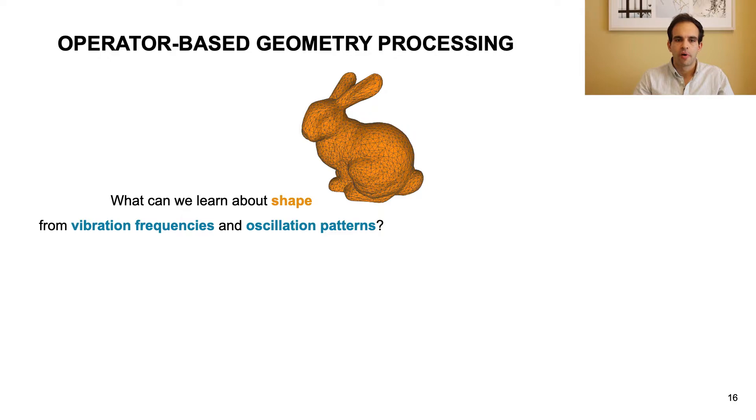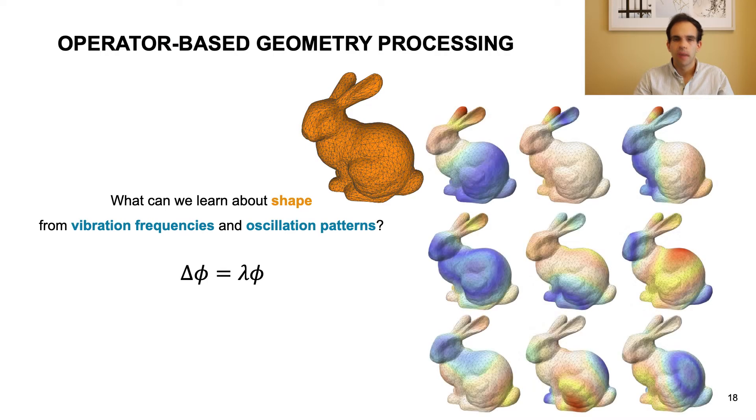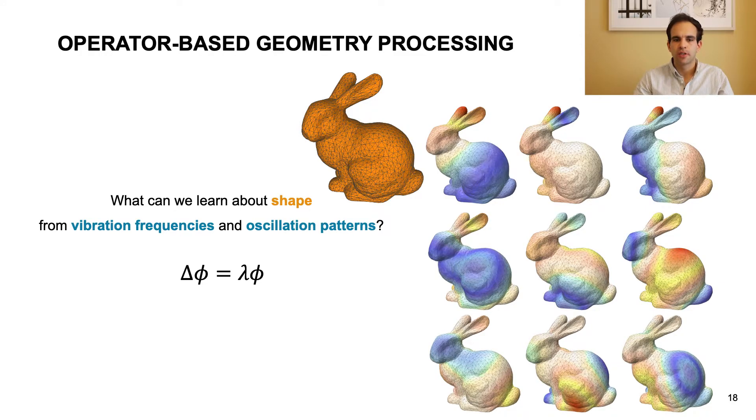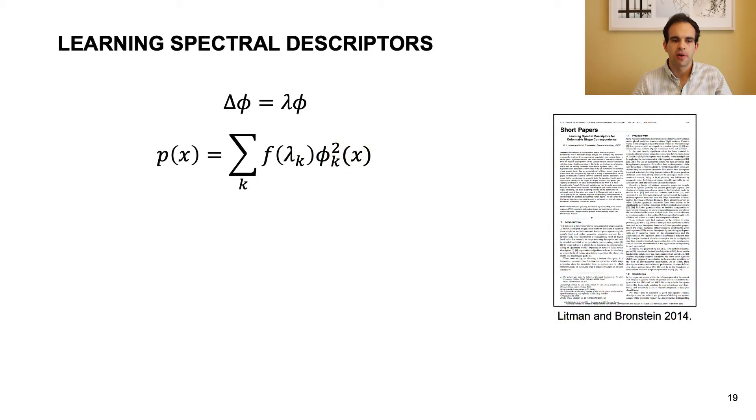To design our learning algorithm, we borrow machinery from spectral operator based geometry processing. This field contains tools and techniques that answer the question of what can we learn about the shape of an object from its vibration frequencies and oscillation patterns. The key construction is the Laplacian operator, which can be defined on the vertices of a triangle mesh from local geometry. By considering the Laplacian eigenvalues and eigenfunctions, we can say a lot about the object's global structure. Physically, this boils down to looking at the vibration modes and frequencies of our 3D model when it is, say, lightly tapped with a hammer. Our method is inspired by earlier work done by Littmann and Bronstein in 2014. In their paper, they make the observation that many handcrafted spectral shape descriptors, popular in geometry processing, follow a similar formula. They can be expressed as the scalar function of the Laplacian eigenvalues multiplied by the Laplacian eigenfunction and all added up.